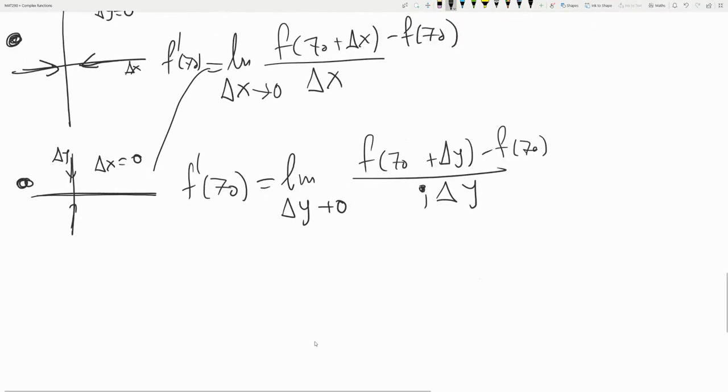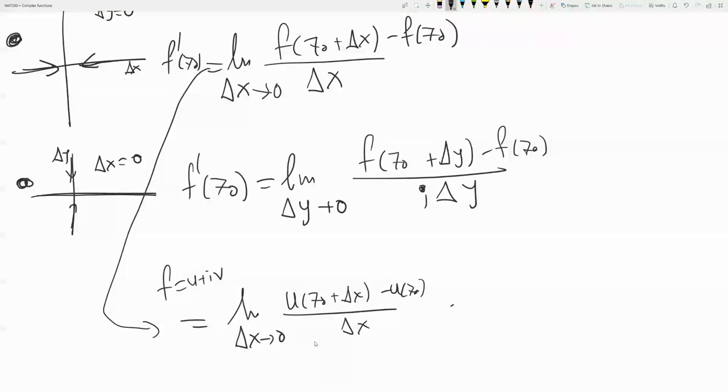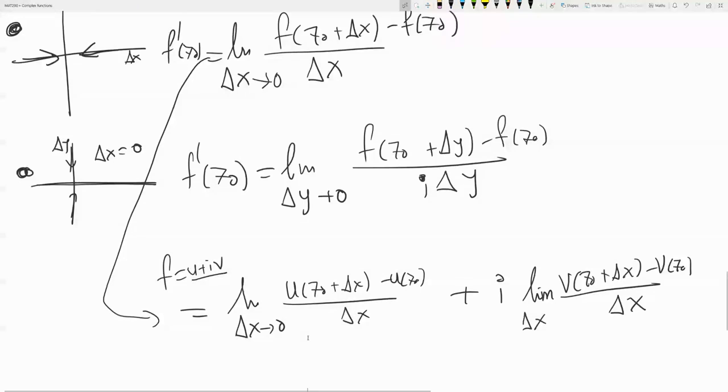So let's work with the first guy. Use that f is u plus iv. That gives you the following: the limit as delta x goes to zero of u(x0 + delta x, y0) - u(x0, y0) over delta x plus i times the same for v. Here we use that f is u plus iv and that the limit is linear, so we split the limit.